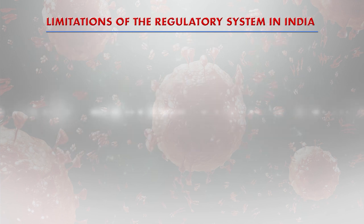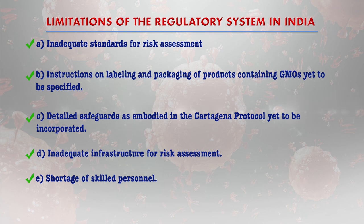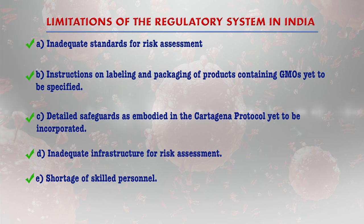Limitations of the regulatory system in India include inadequate standards for risk assessment, instructions on labeling and packaging of foods containing GMOs that are yet to be specified, detailed safeguards as embodied in the Cartagena Protocol that need to be incorporated, inadequate infrastructure for risk assessment, and a shortage of skilled personnel in this area.